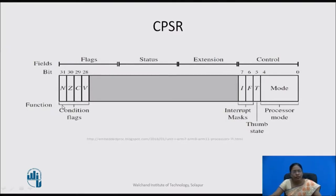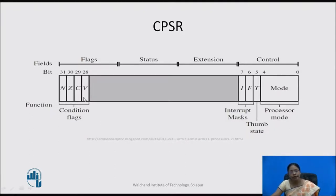The flag field contains condition flags N, Z, C, V. In the control field: there are two bits for interrupt mask, one bit for state, and five bits for mode (bits 0 to 4). Let us look at these different flags as well as the modes and the interrupt mask bits in detail in the CPSR.